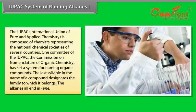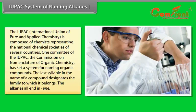The IUPAC — International Union of Pure and Applied Chemistry — is composed of chemists representing the national chemical societies of several countries. One committee of the IUPAC, the Commission on Nomenclature of Organic Chemistry, has set a system of naming organic compounds. The last syllable in the name of a compound designates the family to which it belongs. The alkanes all end in -ane.